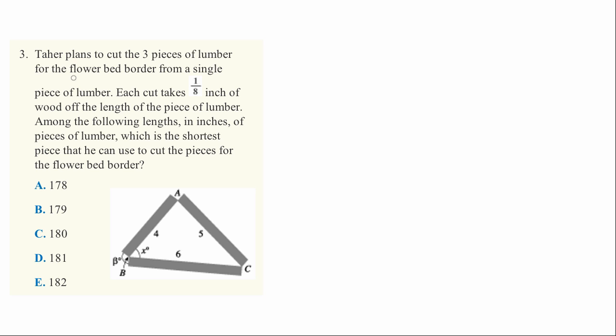Tahir plans to cut three pieces of lumber for the flower bed from a single piece of lumber. Each cut takes one-eighth of an inch of wood off the length of the piece of lumber. Among the following lengths in inches, which is the shortest piece that he can use to cut the pieces for the flower bed border?